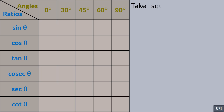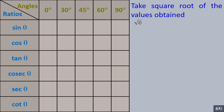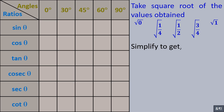Take the square root of the values obtained: square root of 0, square root of 1/4, square root of 1/2, square root of 3/4, square root of 1. Simplify to get: square root 1 by square root 4, square root 1 by square root 2, square root 3 by square root 4, square root 1.